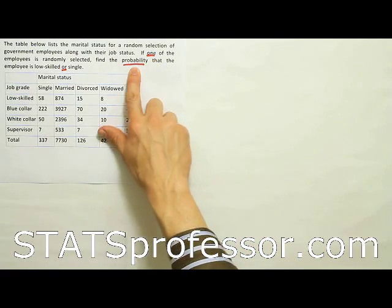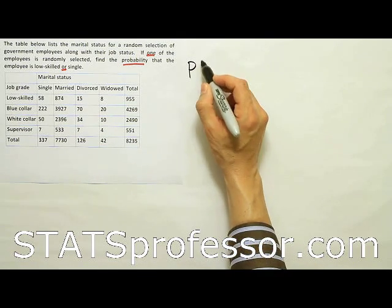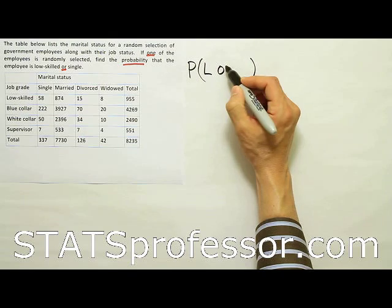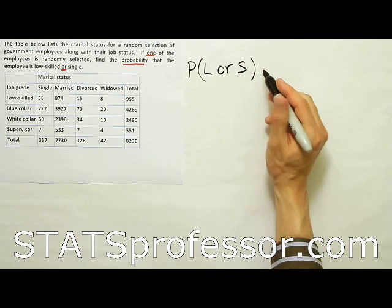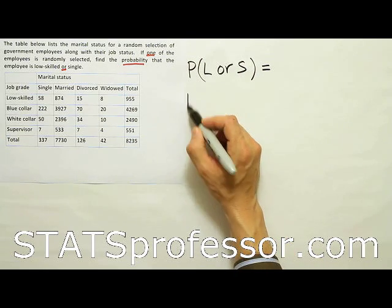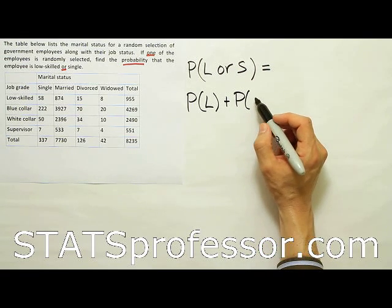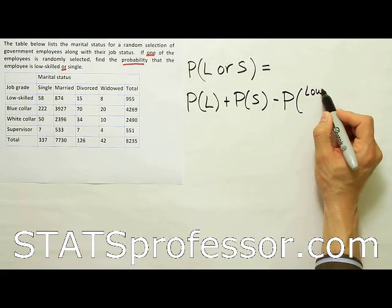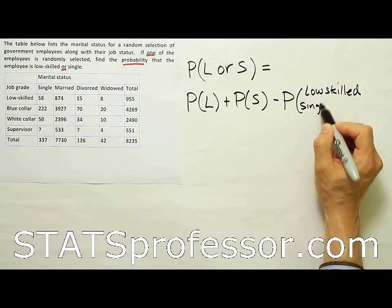One randomly selected, looking for probability, and we have the word OR. Putting those together, I think it's addition rule of probability, so I'm going to go ahead and write the formula as probability of, in this case, it's going to be low-skilled or single. So let's use L or S as a shorthand for that. And then it breaks down to the probability of low-skilled, plus the probability that an employee is single, minus the probability that we have a low-skilled, single employee.